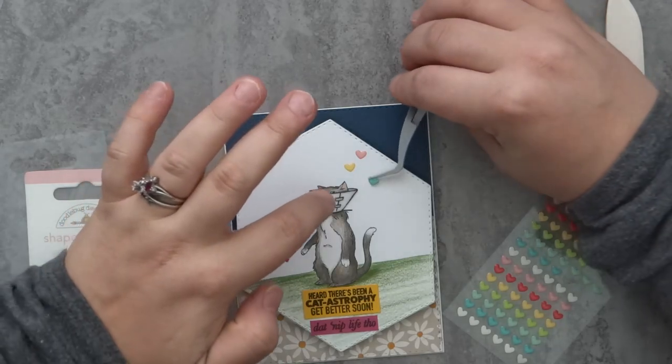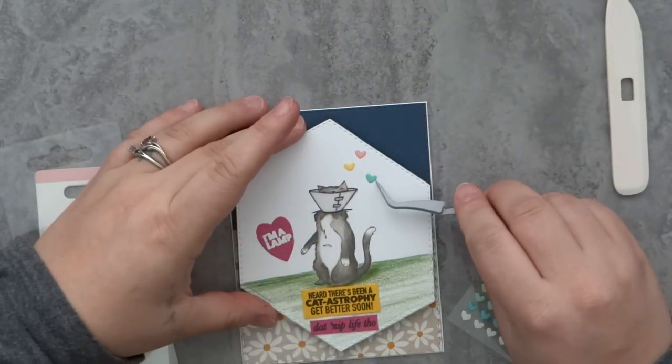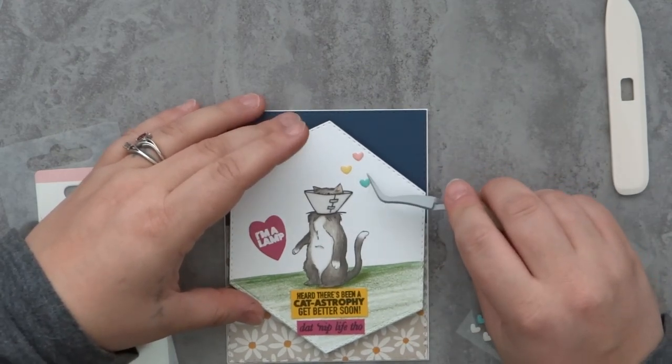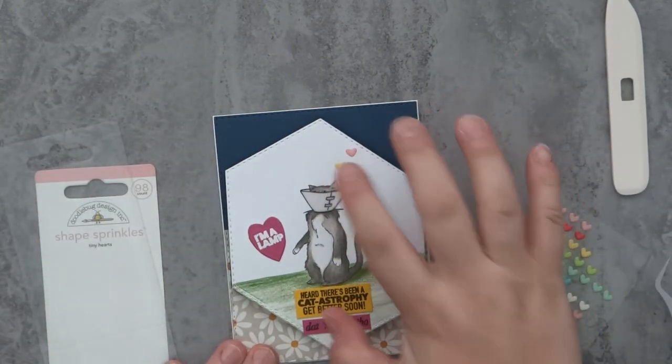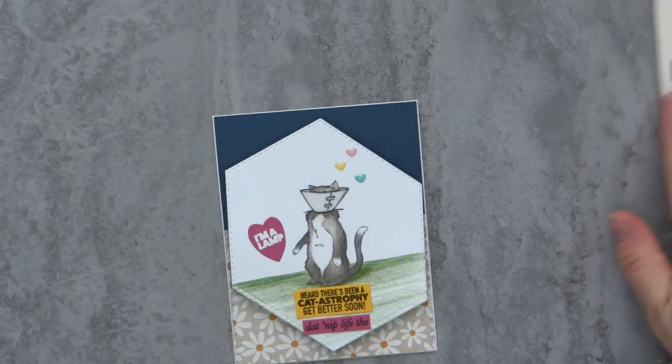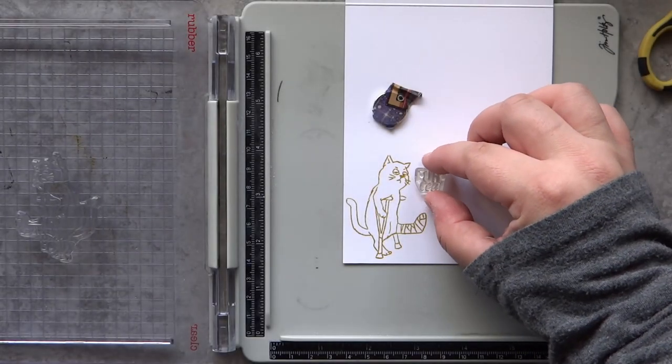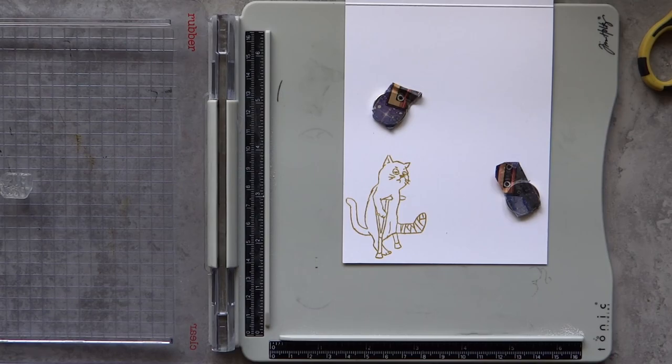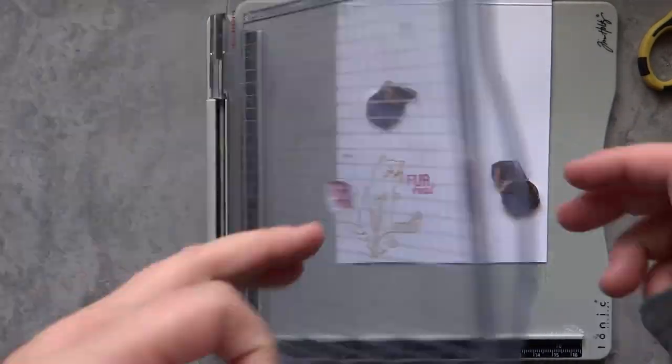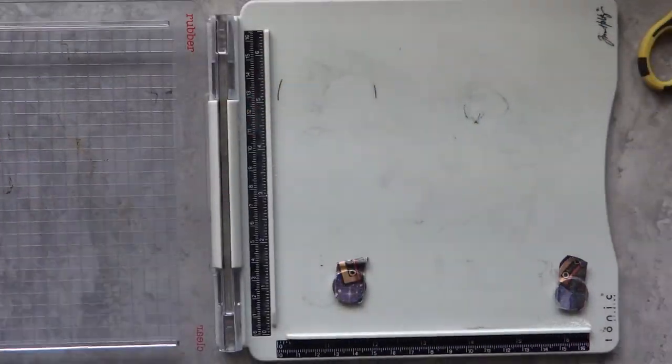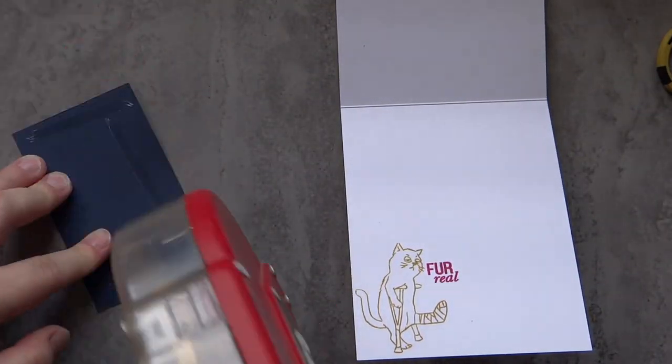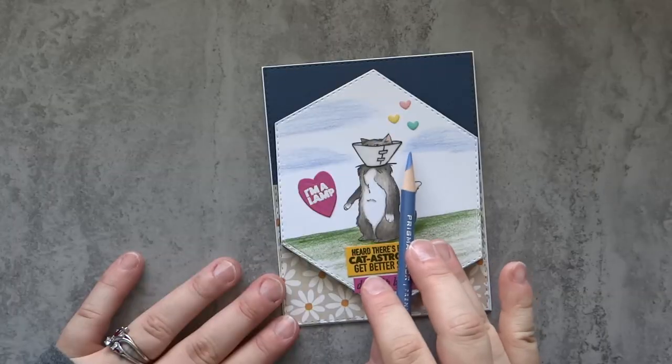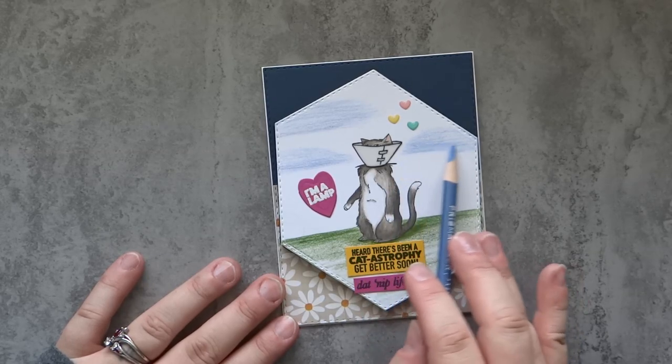I also added some hearts from Doodlebug. They're such a pastel tone, I don't know if they work with the rest of the card, but I'm going with it. All of the inks and products I used, including the power packs, are linked down below in the description box. As a final step, I decided to do some clouds using the same sketchy technique with colored pencil as I did with the grass down below.